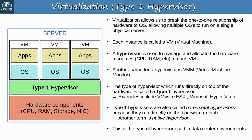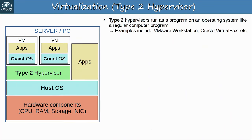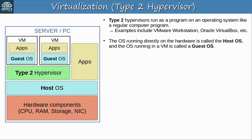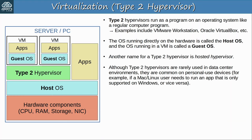But let's look at the other type of hypervisor, type 2. Type 2 hypervisors run as a program on an operating system like a regular computer program. Examples include VMware Workstation and Oracle VirtualBox. You can download these and run them on your home PC or laptop, and then run VMs inside. The OS running directly on the hardware is called the host OS, and the OS running in a VM is called a guest OS. In the diagram there is a host OS running some apps, including a type 2 hypervisor, and on top of the hypervisor there are two VMs running a guest OS with their own apps running inside.